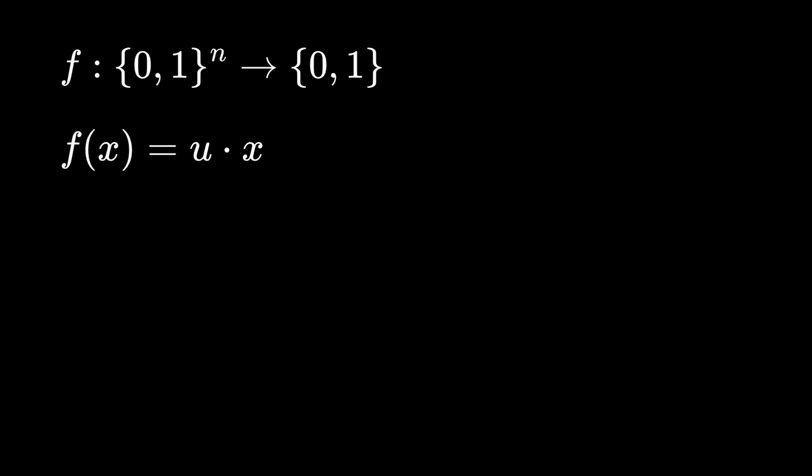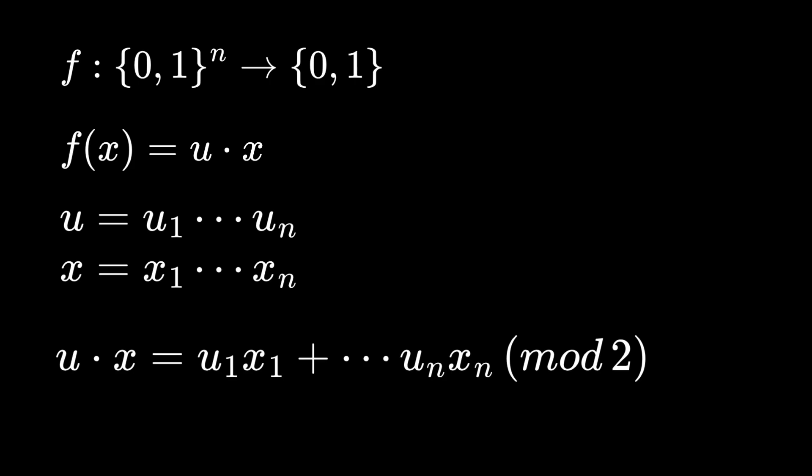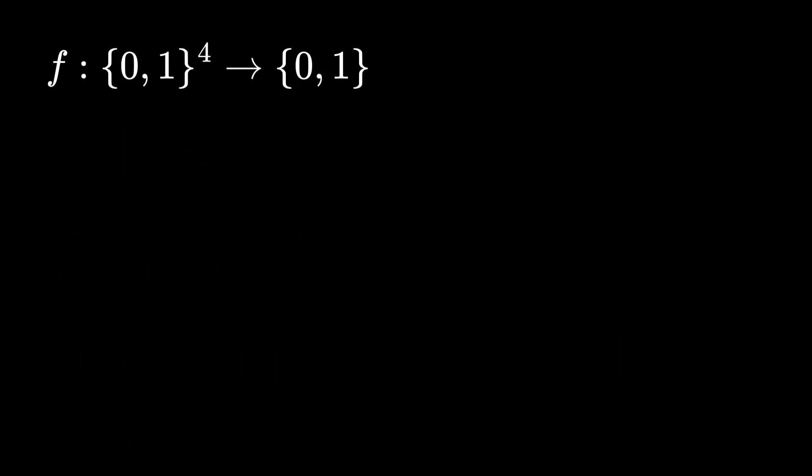On the input x, the output is the inner product of x and a secret binary string u. By inner product here, we mean the inner product modulo 2, i.e., the sum of bitwise multiplication of x and u. Here is an example of the inner product of two binary strings of length 4.